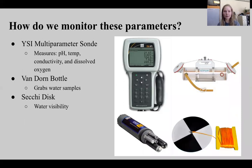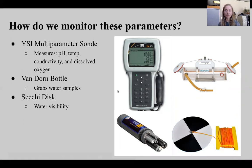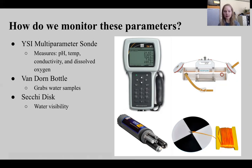How do we monitor all these parameters? We can use a couple different types of equipment. On the left we have a YSI multi-parameter sonde, which measures pH, temperature, conductivity, and dissolved oxygen. We also have a Van Dorn bottle, which can be lowered throughout a lake to grab water samples that we can later bring to a lab to test for different nutrients, such as phosphorus and nitrogen. And then we have a Secchi disc, which helps test for water clarity — relating to total suspended solids and turbidity. The lower we can put the Secchi disc in the water and still see it, the more clear and less turbid the water is.